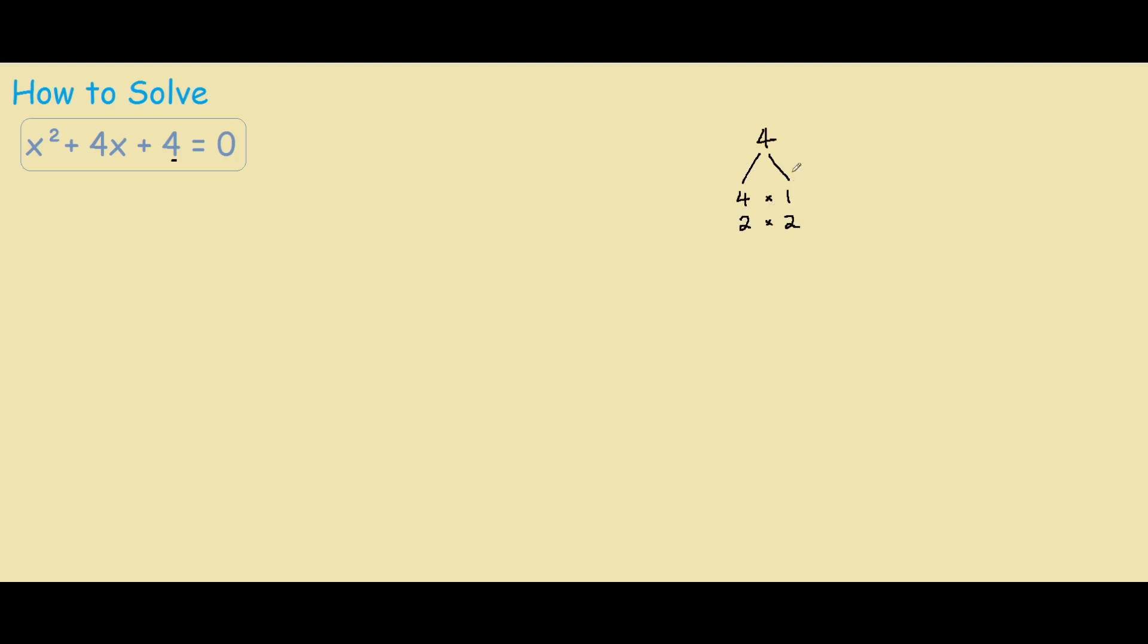And these are the only two factors. Now, to solve this problem, you want to find the factors that when multiplied equal 4, and when added together, they equal 4.